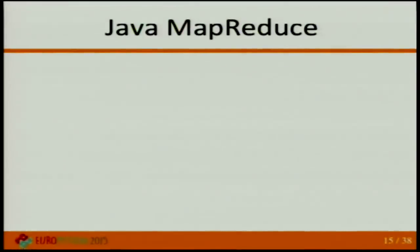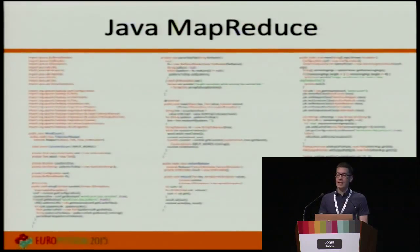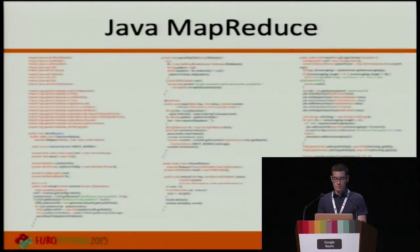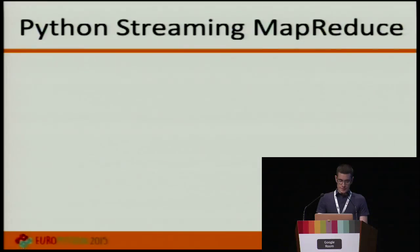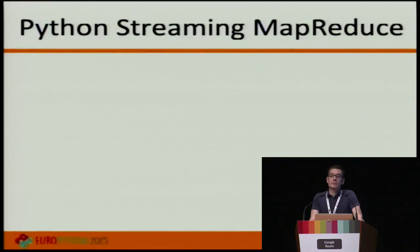Let's look at how our word count example looks in Java. Now you probably understand why you earn so much money coding in Java — more typing means more money. Imagine how much code you'd have to write for a real-world use case in Java. After being impressed by Java's simplicity, let's talk about how we can use Python with Hadoop.